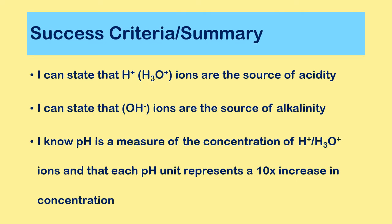In terms of success criteria, you should be able to state that the H+ or H3O+ ion is the source of acidity, state that the hydroxide or OH- ion is the source of alkalinity, and know that pH is a measure of the concentration of H+ ions in solution, and that each pH unit represents a 10 times change in concentration of the H+ ion.